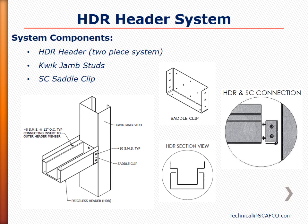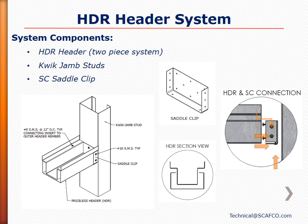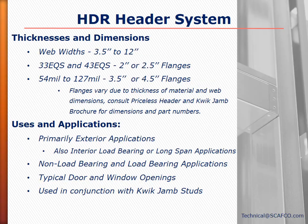The saddle clip is only used with the HDR header. The insert of the HDR header allows the system to obtain higher lateral and vertical loads. The unique insert profile not only increases the loads of the member but also acts as an effective track section to receive the cripple studs. The assembly of the HDR header system is very straightforward and similar to the HD header: quick jams are installed first, then saddle clips are screwed through pre-punched holes to the web of the quick jams.